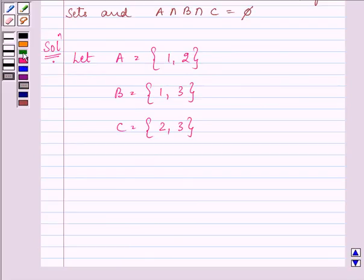Now, what will be the answer of A intersection B? That will be only one element which is common to both of them, and that is 1.